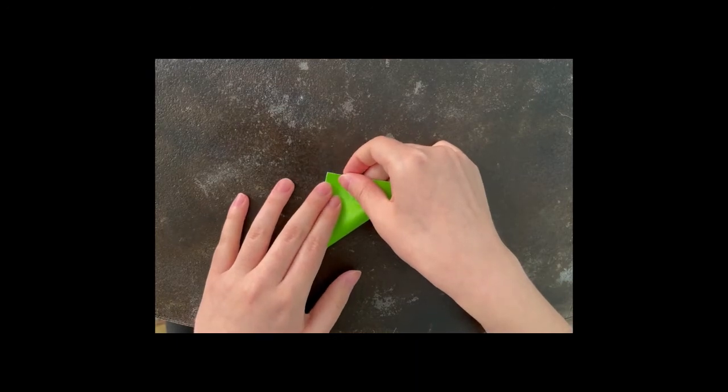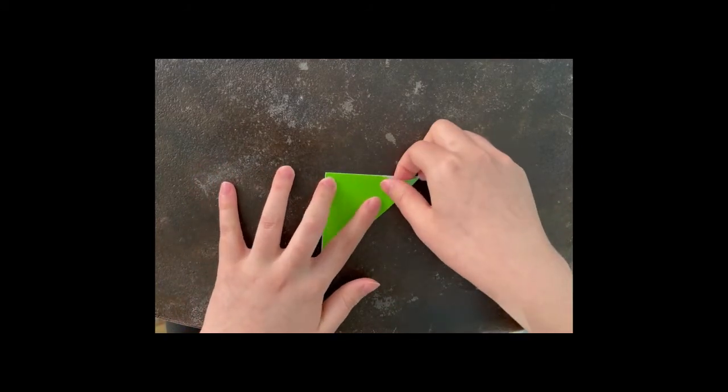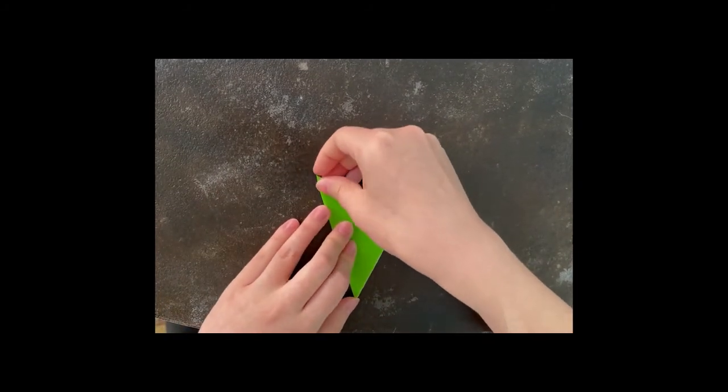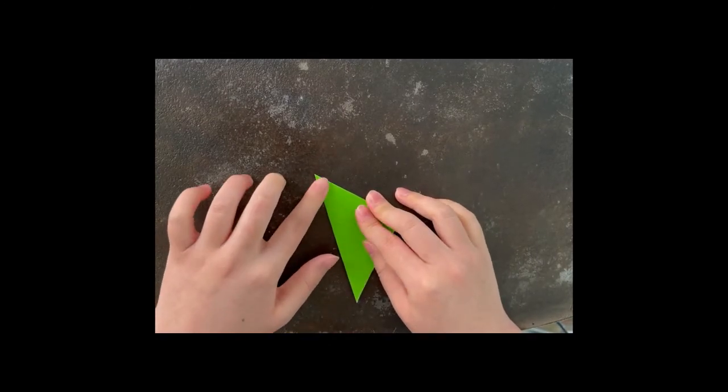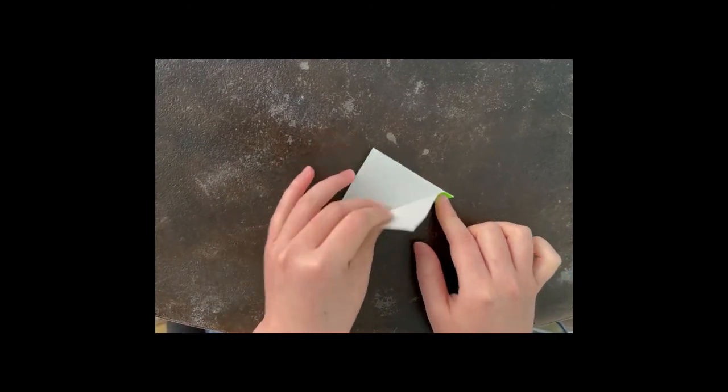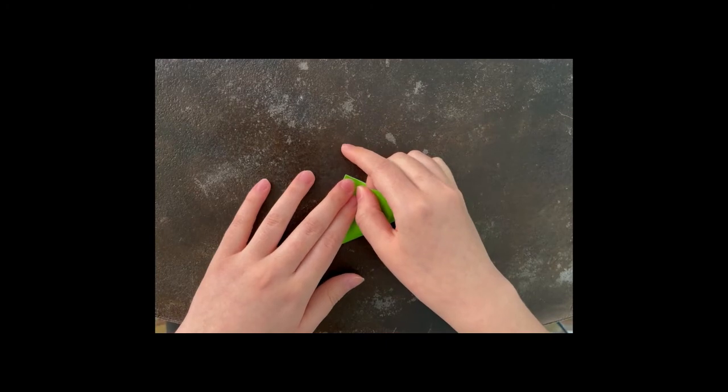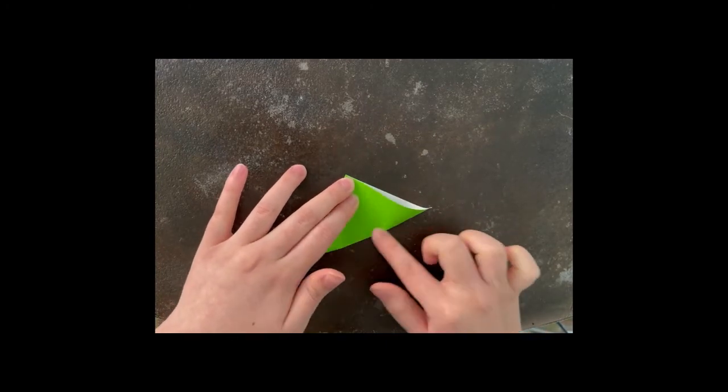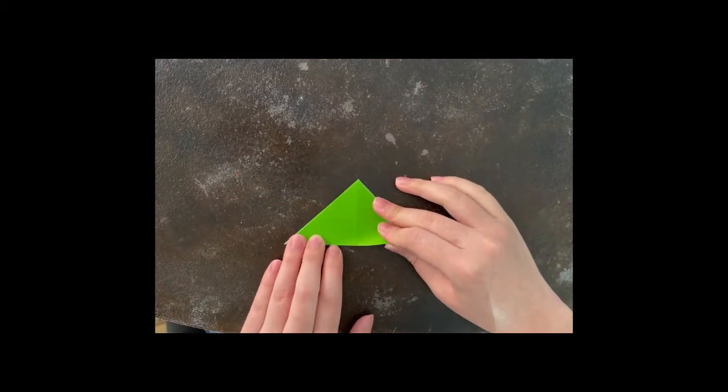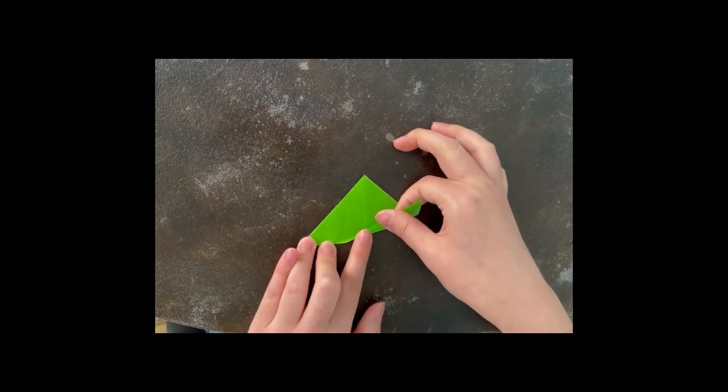So first, make a triangle. Make sure that they meet up here. Make sure, since it's a smaller paper, doing triangles is a bit easier. And we're going to fold it. And we're going to do the next. And after that, we're just going to fold it like this. It doesn't matter the size. I think this is alright.